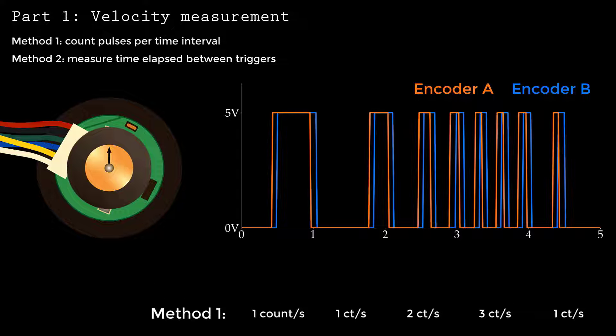In the second method, you measure the time elapsed between triggers and then estimate the speed as one count divided by the time interval. Here, there's 1.4 seconds between the first two triggers. That implies a speed of one count per 1.4 seconds, or 0.71 counts per second.